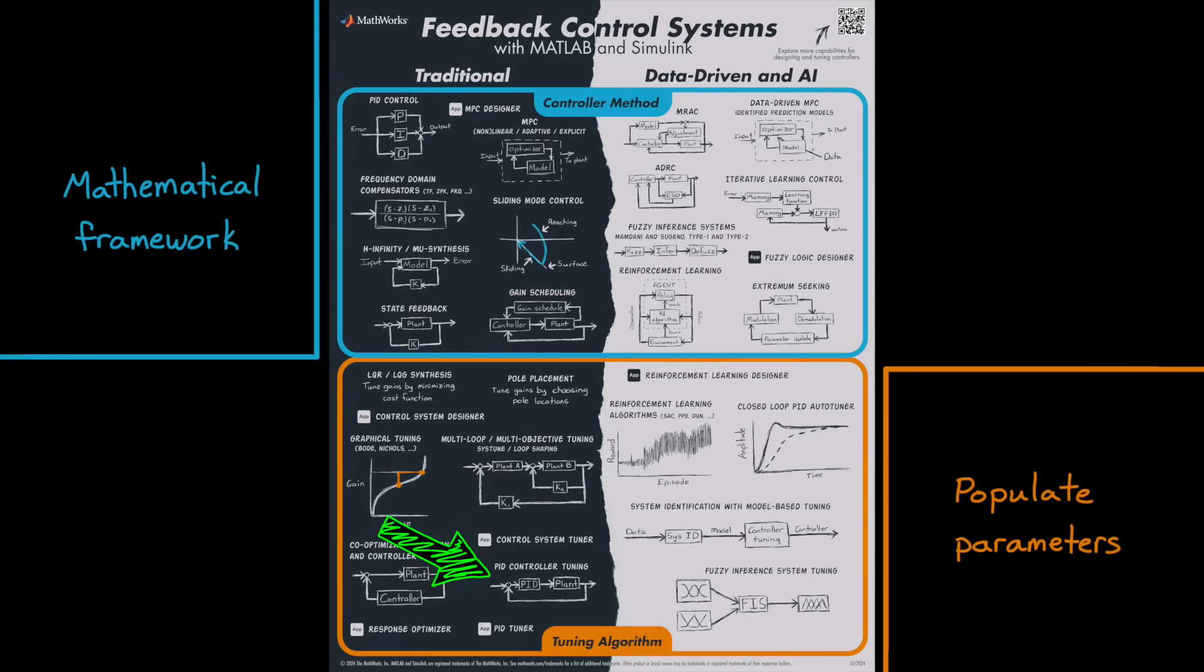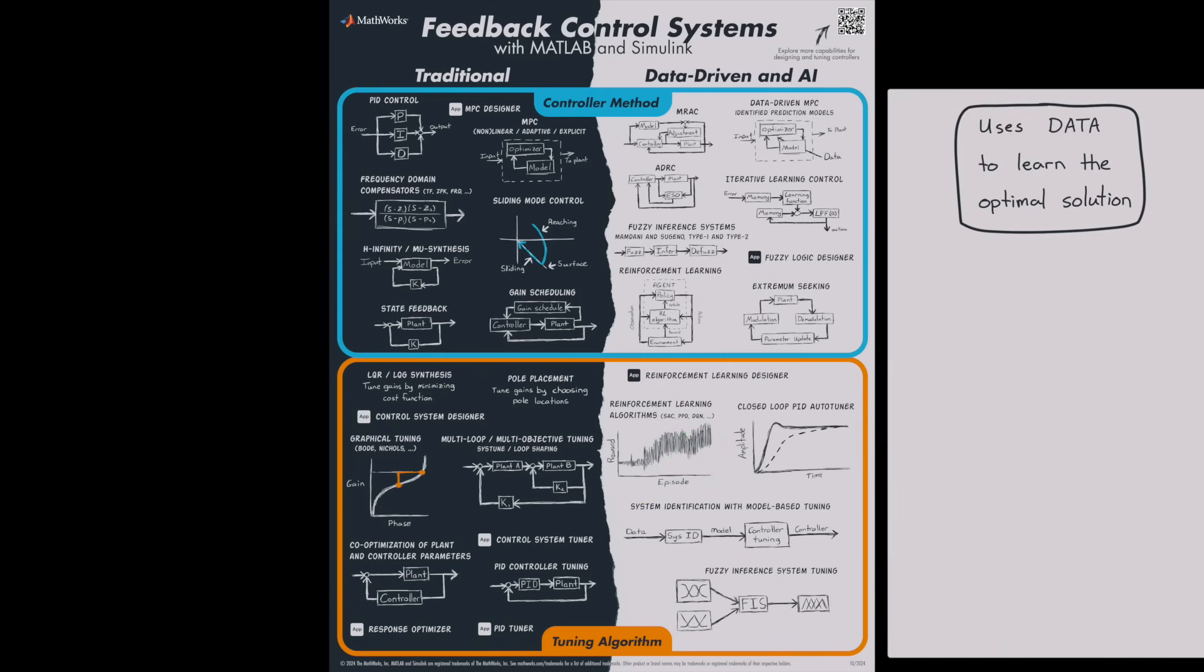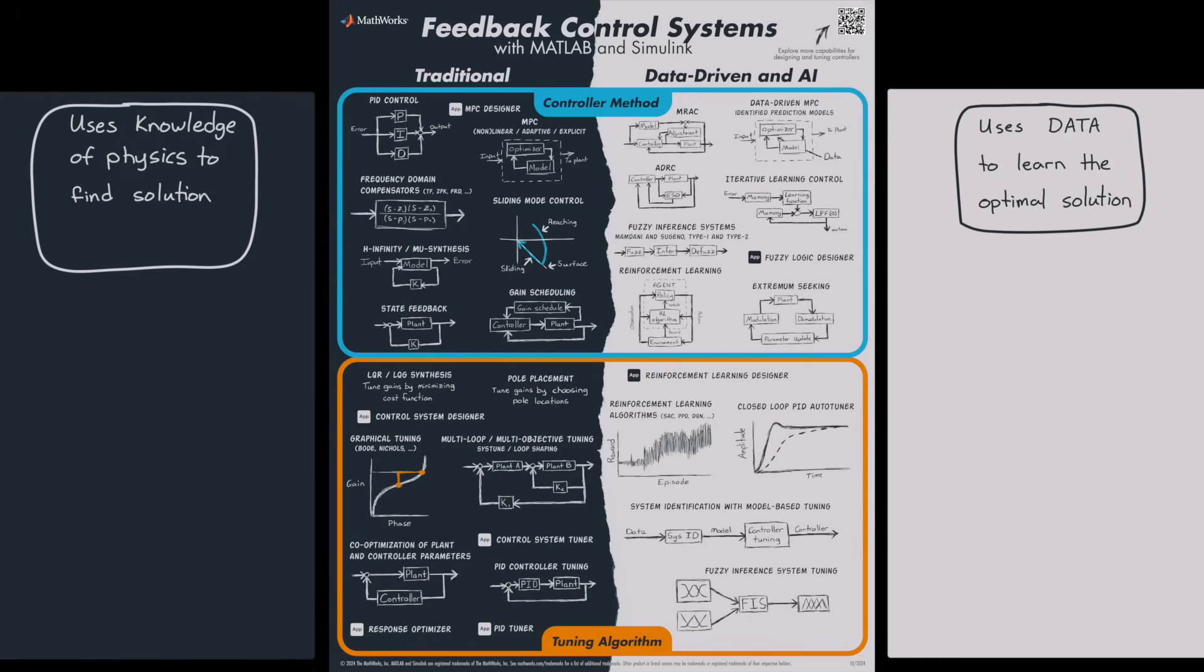Like using a model to calculate the optimal parameters, versus learning-based methods where the PID gains are tuned real-time with hardware in the loop. And then between the left and the right, we're differentiating controllers that use data to learn the optimal solution in some way, versus what we're calling traditional methods, which doesn't really have a good definition. But we're saying that they are controllers that don't rely on data directly, but instead rely on a fundamental understanding of the physics of your problem.